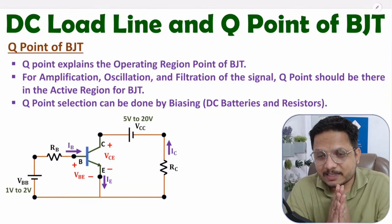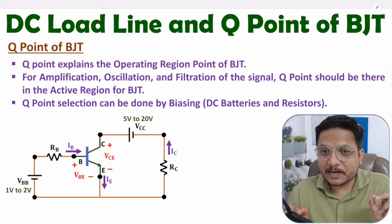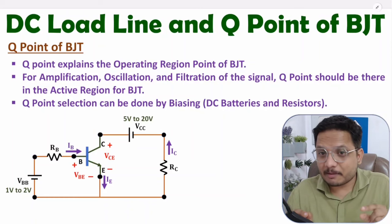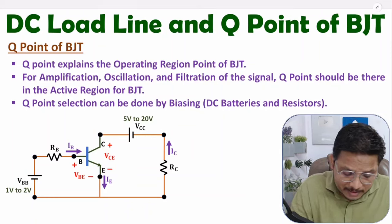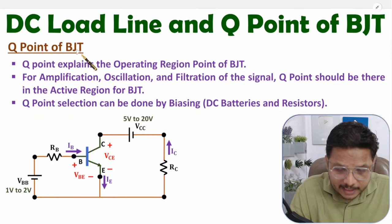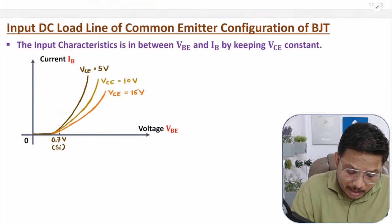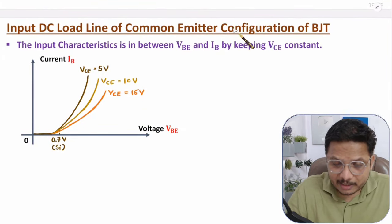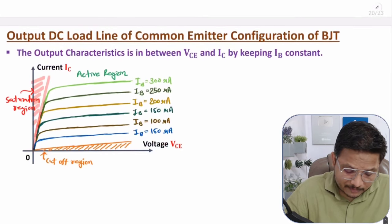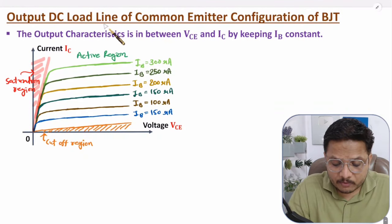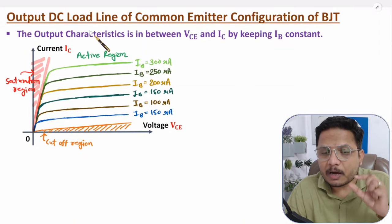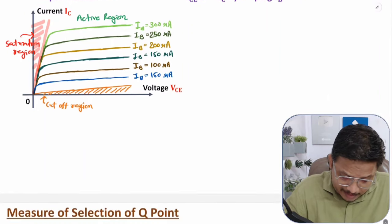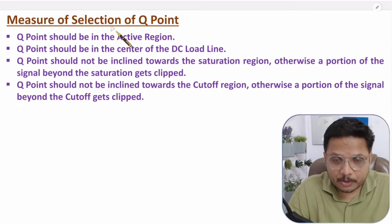Hello friends, welcome to Engineering Quenta family. In this video I will explain DC load line and Q point of BJT. The outline covers: Q point of BJT, input DC load line for common emitter configuration, output DC load line for common emitter configuration, how to identify Q point based on DC load line, and the measure of selection of Q point.